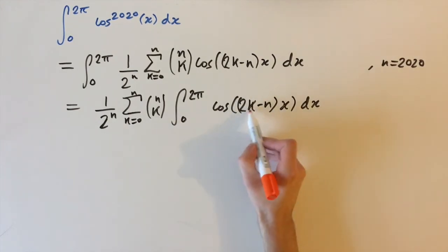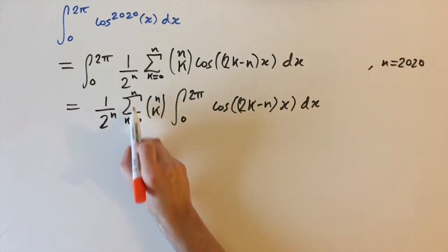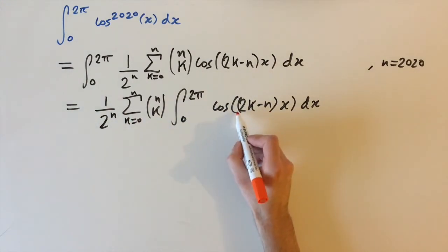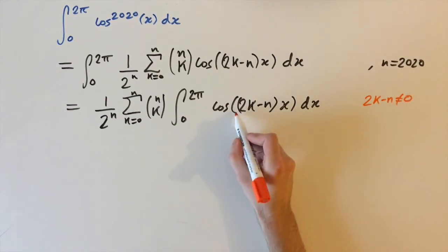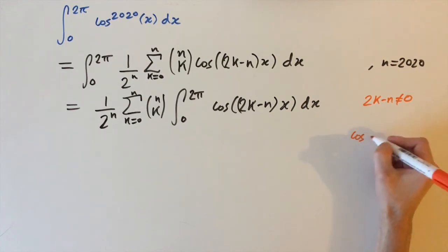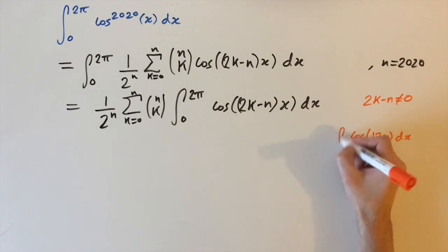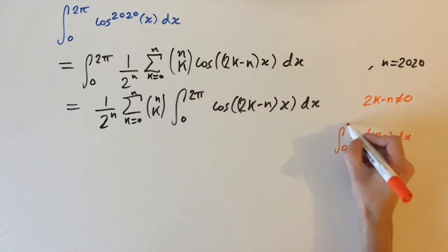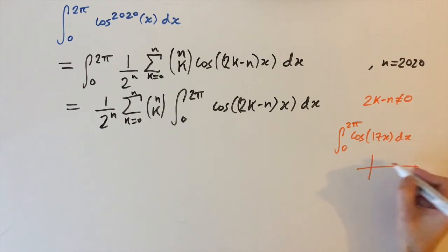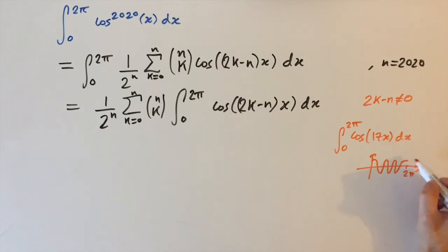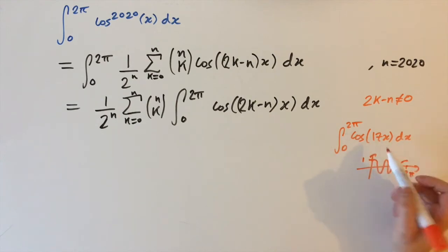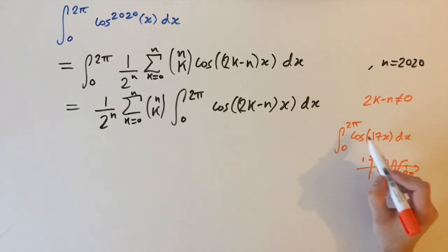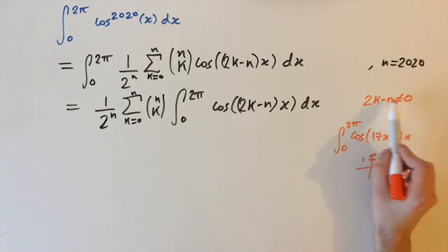This integral is going to be zero almost all of the time. The values of k sum from zero to n, and if 2k minus n does not equal zero, we have some integer multiple of x inside the cosine. Since we're integrating over 0 to 2π — a complete period — the integral of cosine of any nonzero integer multiple is zero, because the function returns to the same value and the positive and negative areas cancel.